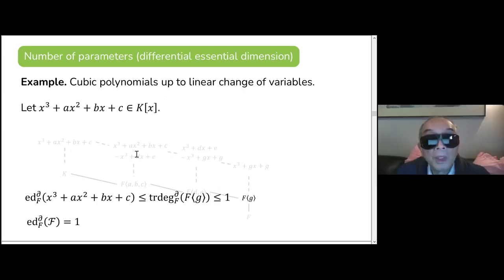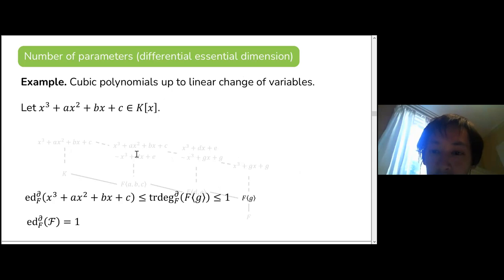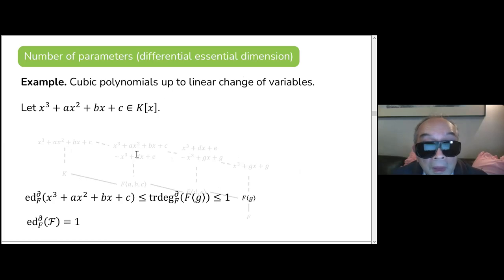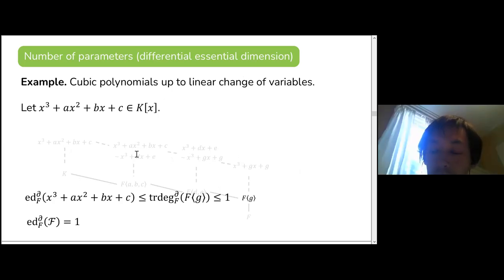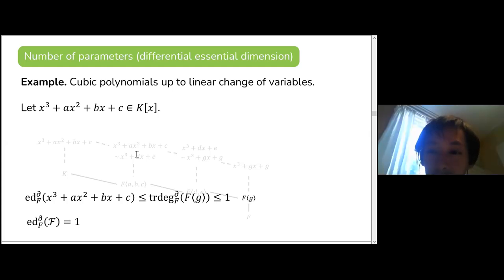In response to a question: yes, the minimal field of definition could have more than one parameter — the differential transcendence degree could be two, three, or any number. The field generated by such a set of parameters is the field of definition for the object.